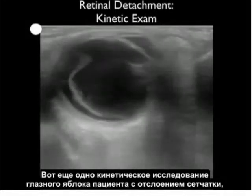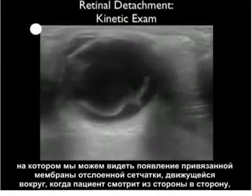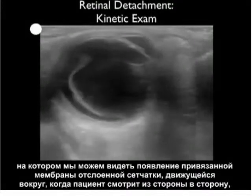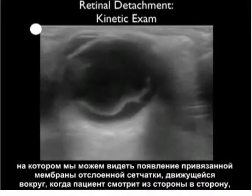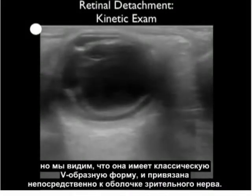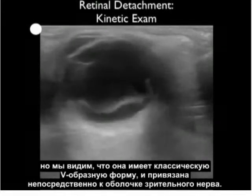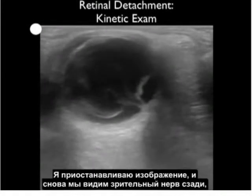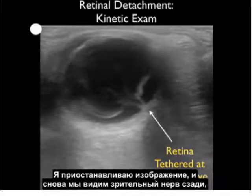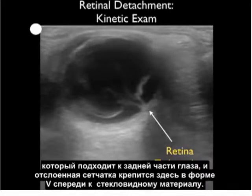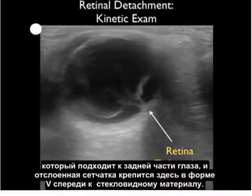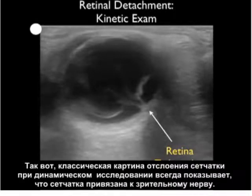Here's another ocular kinetic exam of a retinal detachment. We can see the tethered membrane appearance of the detached retina moving as the patient looks from side to side. It has a classic V-shape that tethers in at the optic nerve sheath. Stilling that image, we can see the optic nerve posteriorly coming up towards the back of the eye, with the detached retina tethered there, forming a V shape extending anteriorly into the vitreous material — the classic appearance of a retinal detachment on kinetic examination, always tethered at the optic nerve.